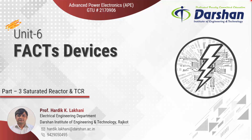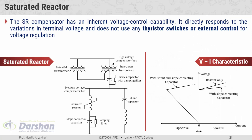Part 3 explains the saturated reactor and thyristor controlled reactor. The saturated reactor, also referred to as an SR compensator, has an inbuilt voltage control capability. It directly responds to variations in terminal voltage and does not use any thyristor switches or external control for voltage regulation. In short, the saturated reactor compensator is used to control the voltage at the point of connection.